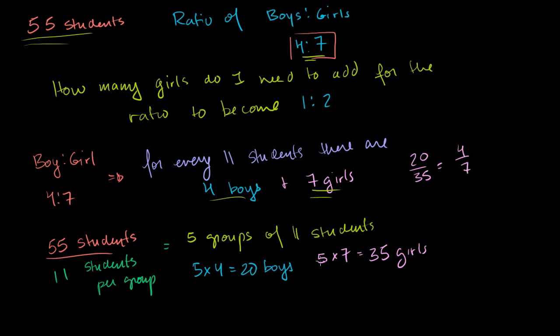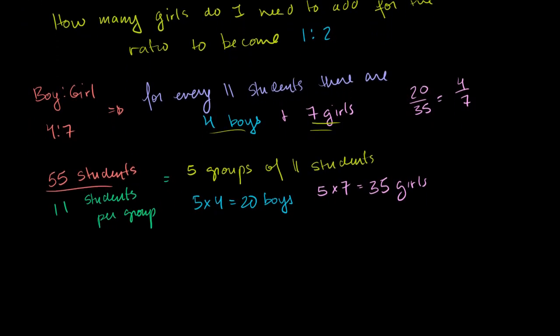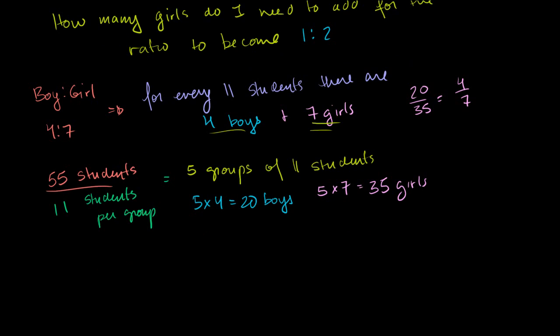So that's what we have right now. Now, we're going to add girls to the classroom to change the ratio. So let's do this. So right now, we have 20 boys and we have 35 girls. We just figured that out.